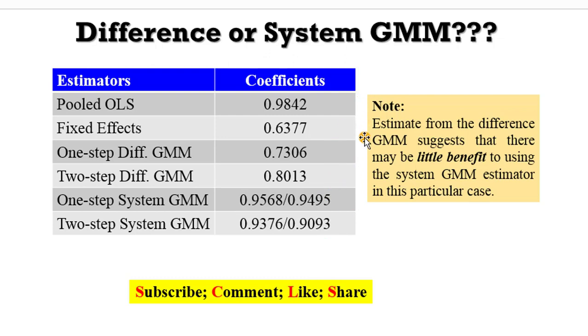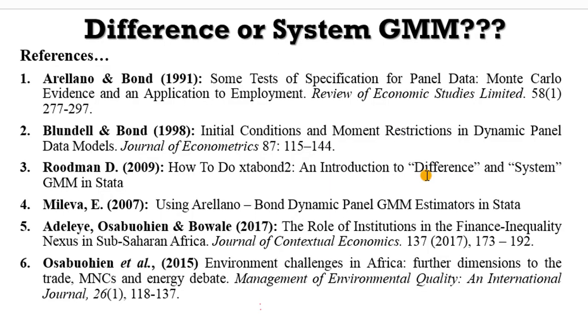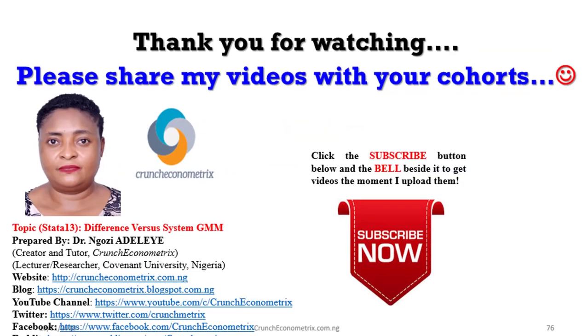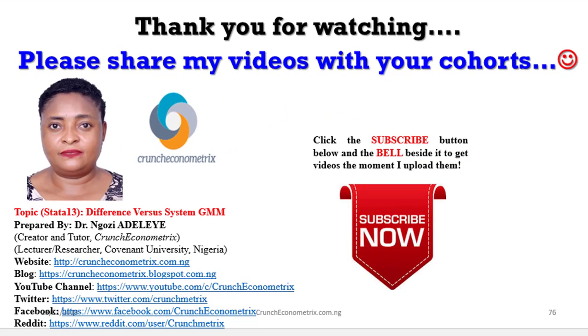So you need to read up on Difference and System GMM. Please, any of these articles will suffice, and there are so many articles too on the internet. Video tutorials are not sufficient, please read up to buttress your understanding. Please don't go away, in the next video I will show you how to interpret GMM outputs. Once again, thank you for watching. Please share my videos with your cohorts, join my Facebook community, please join me on Twitter, join me on Reddit. Always remember that Crunch Econometrics is dedicated to beginners and intermediate users.